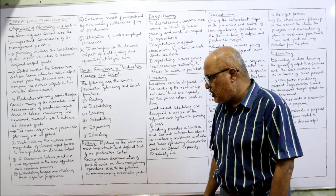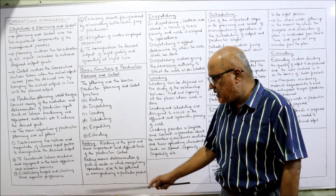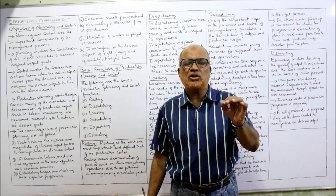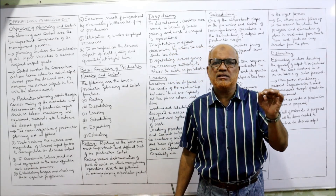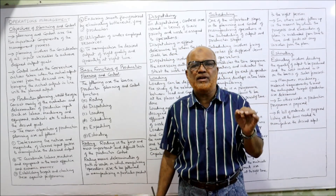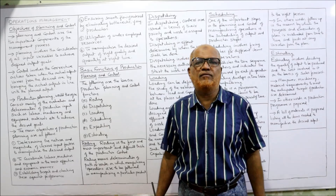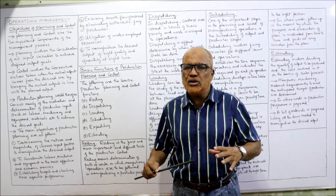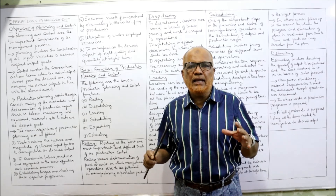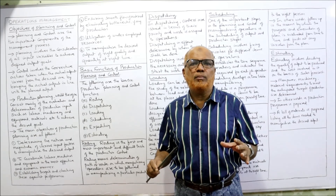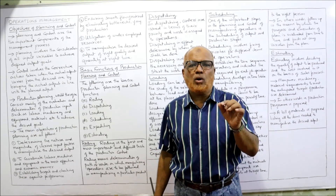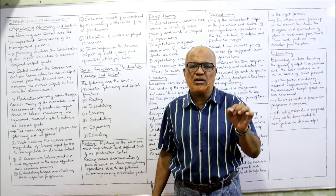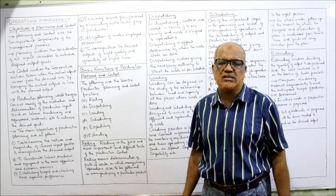The second objective is to coordinate labor, machines, and equipment in the most efficient and economic manner. Production will be successful only when all resources are used efficiently — materials should not go to waste and labor should not be idle. All input resources should be efficiently and effectively utilized.